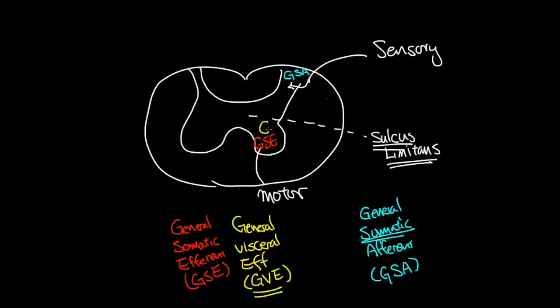So General Visceral Efferent goes here. And then you also have a General Visceral Afferent. So these receive signals and give signals to the internal organs. So that's GVA.